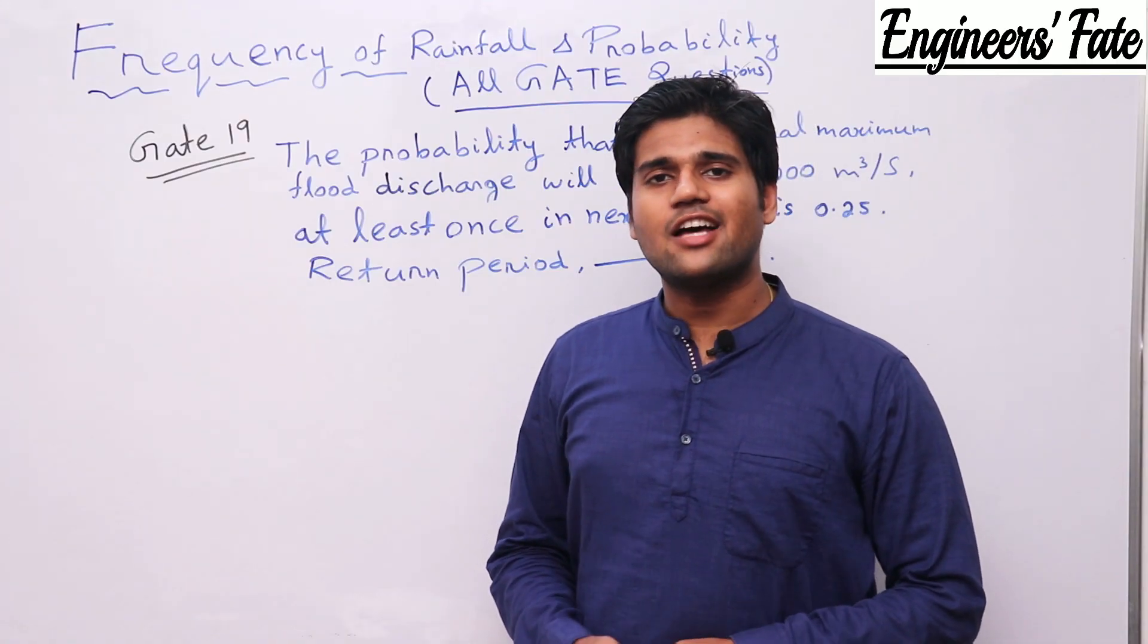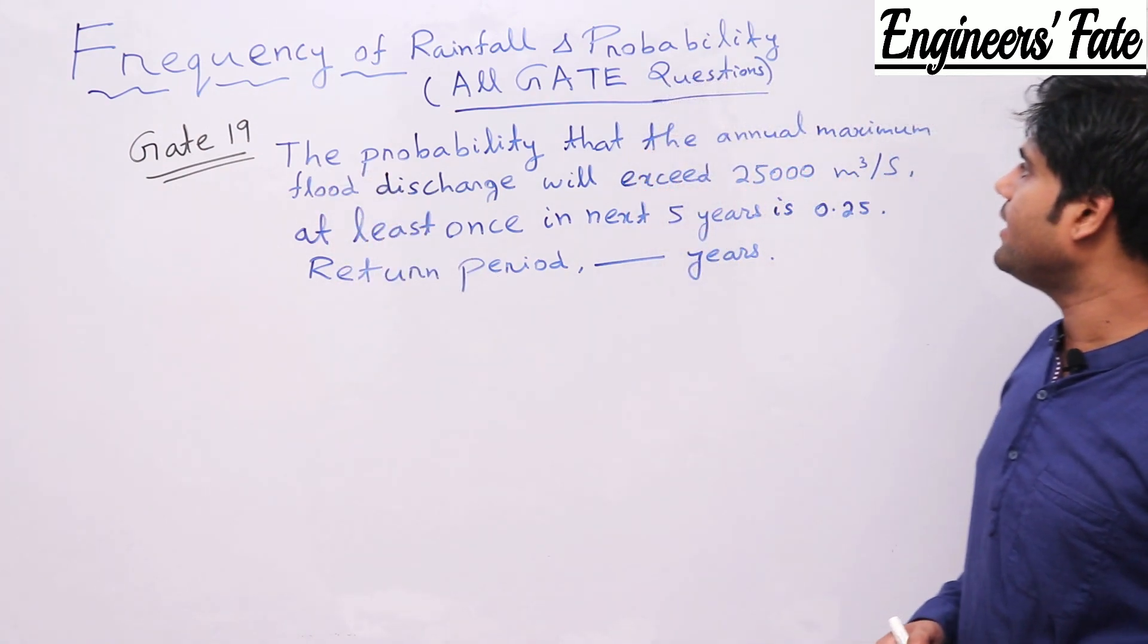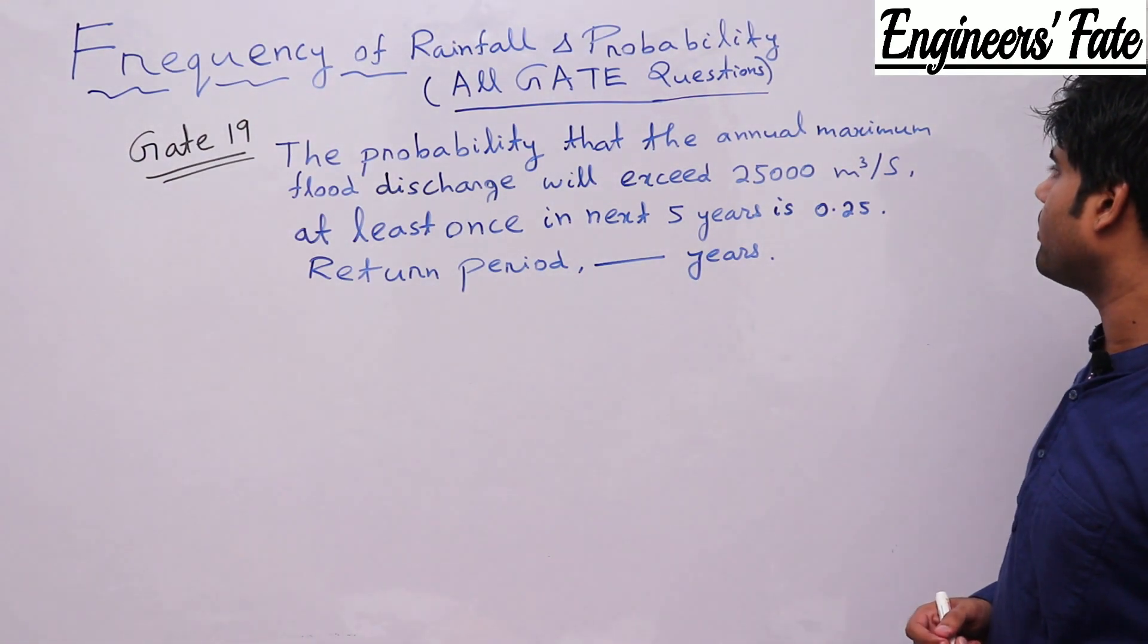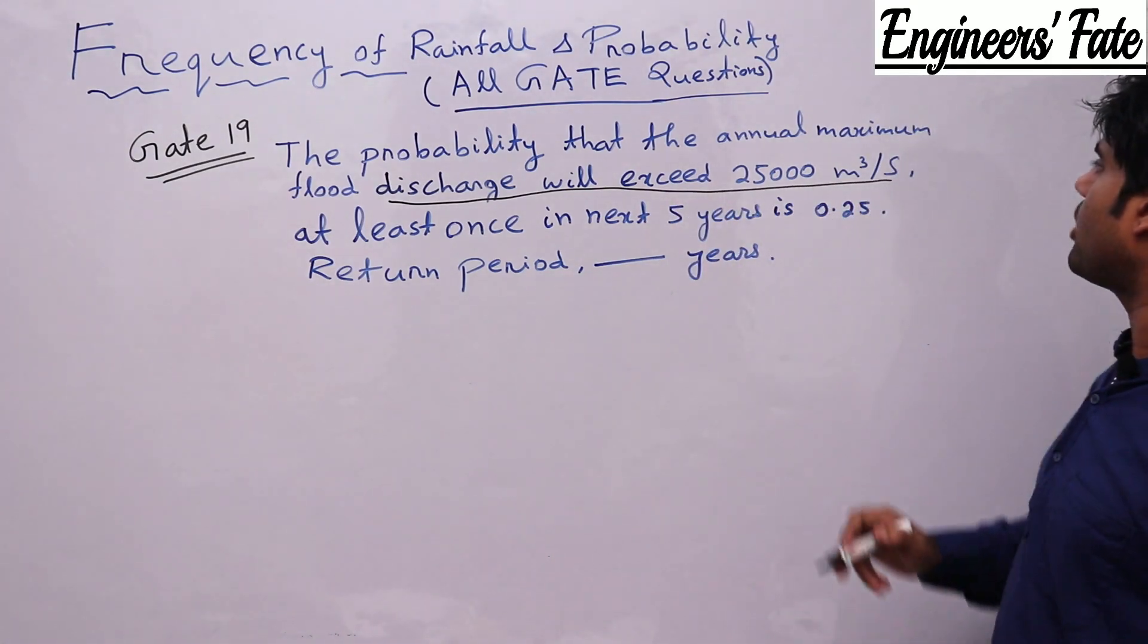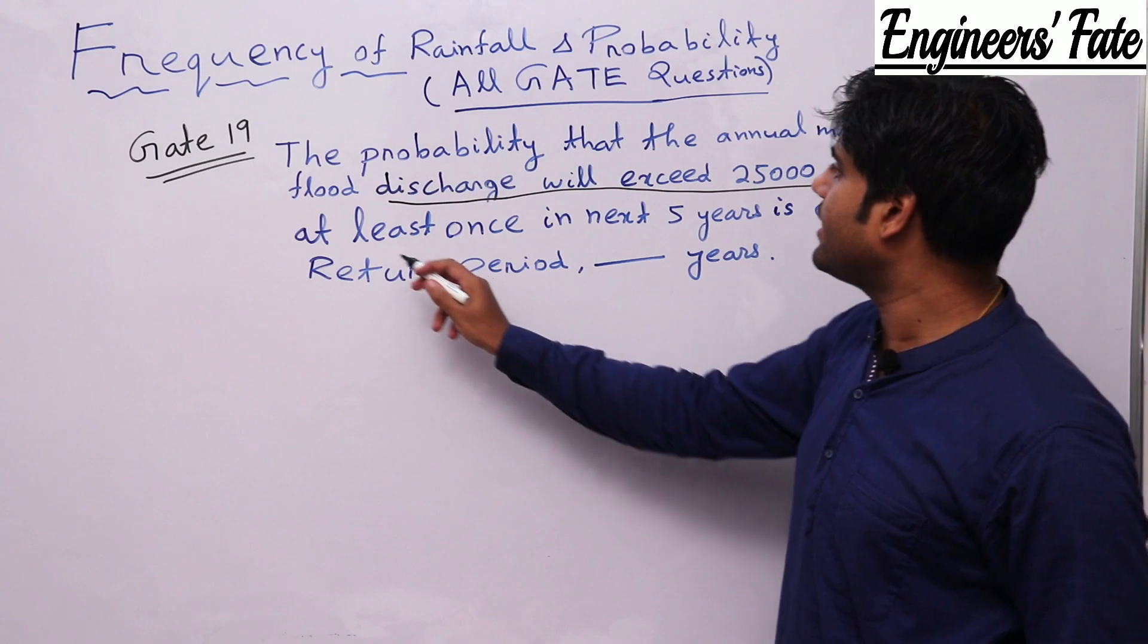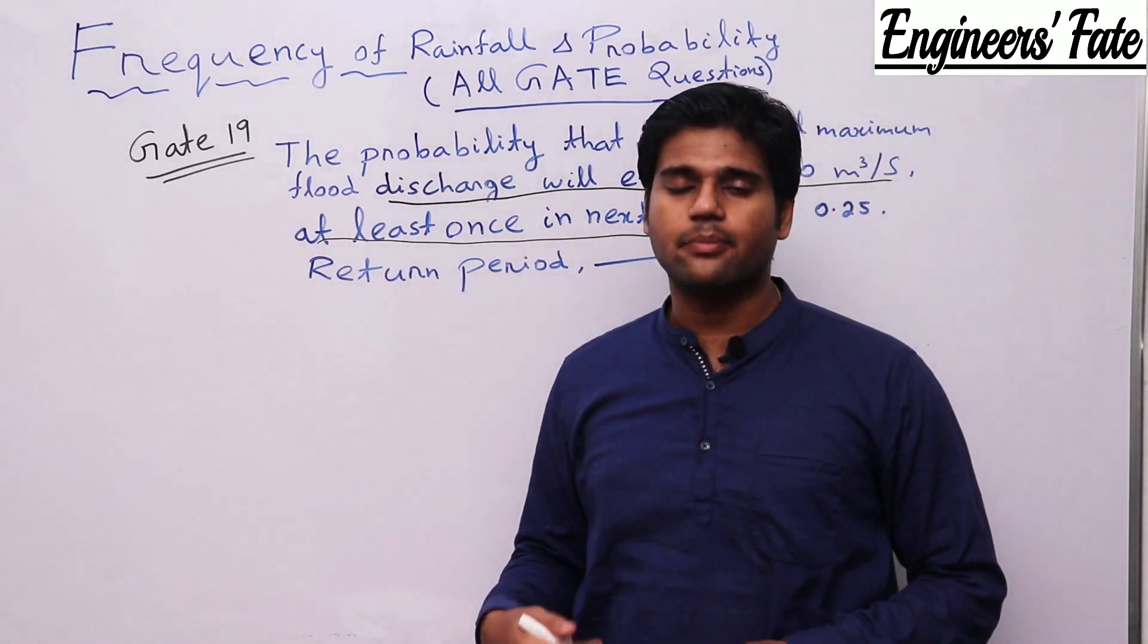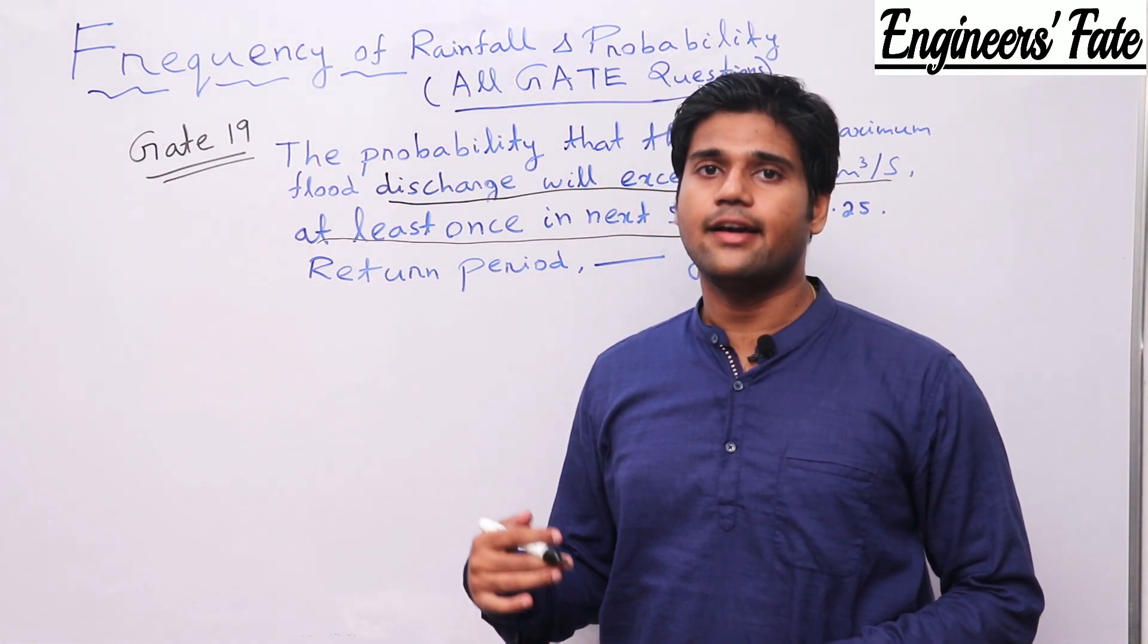So this is the last question we have to discuss, asked in GATE 19. The probability that the annual maximum flood discharge will exceed 25,000 meter cube per second, this discharge data is unnecessary. At least once in next 5 years. I have told you if something is given at least once in N years that is called as risk.